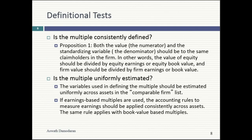Let's start with the definitional test. Whenever I look at a multiple, these are the first two questions. First: is this multiple consistently defined? Here's the rule: if your numerator is an equity value, your denominator should be an equity value too. If your numerator is a firm or enterprise value, your denominator has to be a firm or enterprise value as well. Let's try PE ratio — numerator is equity value, earnings per share is an equity value. The most widely used multiple in the world passes the test. How about EV to EBITDA? Enterprise value in the numerator, EBITDA as a measure of cash flow to operating assets — that passes too.